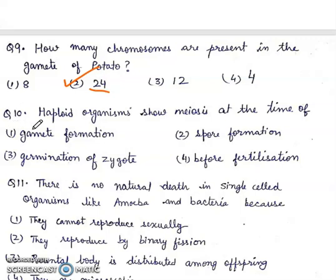Question 10. Haploid organisms show meiosis at the time of: gamete formation, spore formation, germination of zygote, before fertilization. Right answer will be 3rd, germination of zygote.